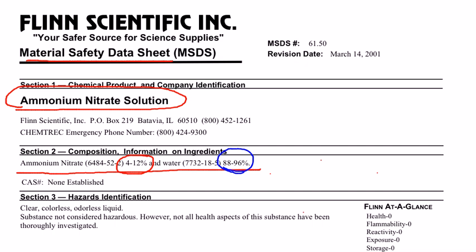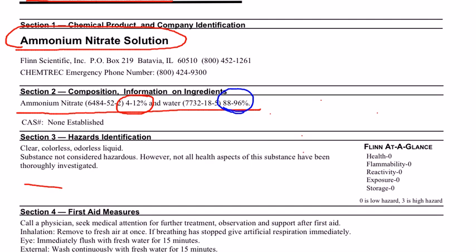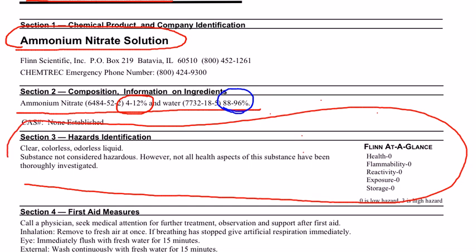While it's nice to know the composition of the solutions, we're not as concerned with that as we are with other portions of this material safety data sheet. Specifically, the hazards identification section — this is the section you really need to read carefully before the lab. About ammonium nitrate, it tells you it is a clear, colorless, and odorless liquid. The substance is not considered hazardous; however, not all health aspects of this substance have been thoroughly investigated.